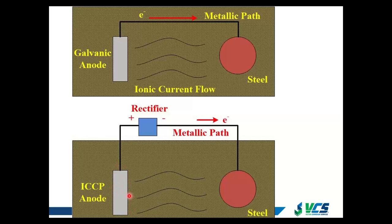With impressed current, we have full control of the amount of electrons — in more aggressive environments we can turn the dial up, and we can supply a lot of current for a lot of steel. However, we now have external electronics — power sources and wiring — so that system needs to be monitored and maintained for an effective service life. The benefit of galvanic systems is that they're kind of set-and-forget: install them properly and let them be for their service life. Impressed current systems really require monitoring and maintenance. If you have those systems at your port facility and they're not being regularly monitored, that is really critical to their effectiveness.